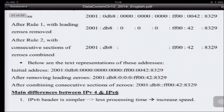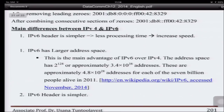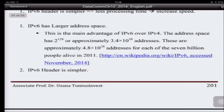What is the main difference between IPv4 and IPv6? First, the IPv6 header is much simpler, so it has less processing time and increases the speed of the router to route packets, because it has fewer fields inside the header. It also has much larger address space: 2 to the 128 is approximately 3.4 times 10 to the 38 addresses, allowing approximately 4.8 times 10 to the 28 addresses for each of the 7 billion people alive in 2011.